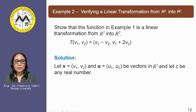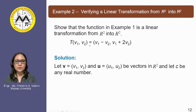In example number two, we are asked to verify whether a function T is a linear transformation from R² into R². We have T of the vector v with components v₁, v₂ is equivalent to the image wherein the first component is v₁ minus v₂ and the second component is v₁ plus two times v₂.